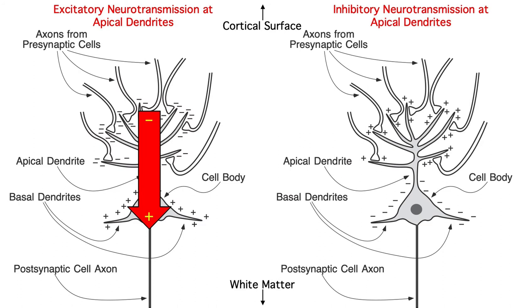If we instead had an inhibitory neurotransmitter like GABA released at the apical dendrites, the polarity would flip, and the positive side of the dipole would point toward the cortical surface. And this would reverse the polarity of the voltage we record from our scalp electrodes.